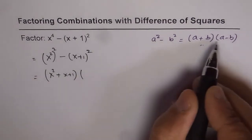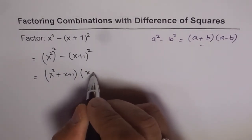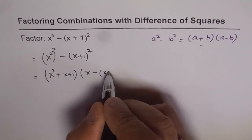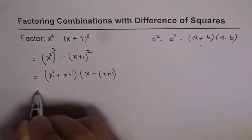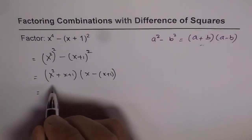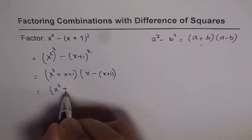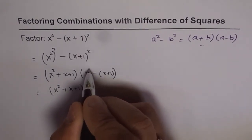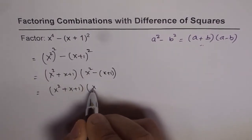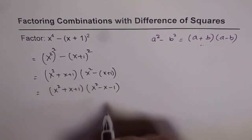And a minus b will be x minus x plus 1. I'm writing two brackets here so that we don't make a mistake. So now let's open these brackets and simplify. So we get x square plus x plus 1 times x square minus x minus 1.